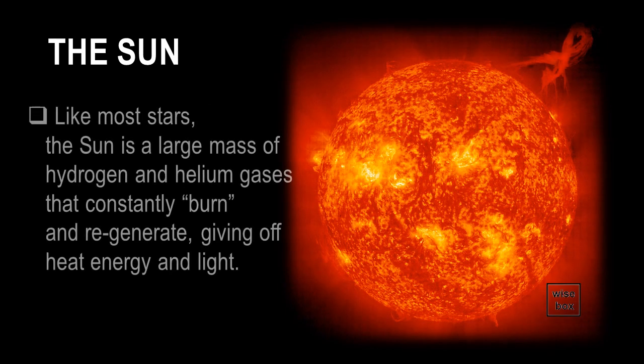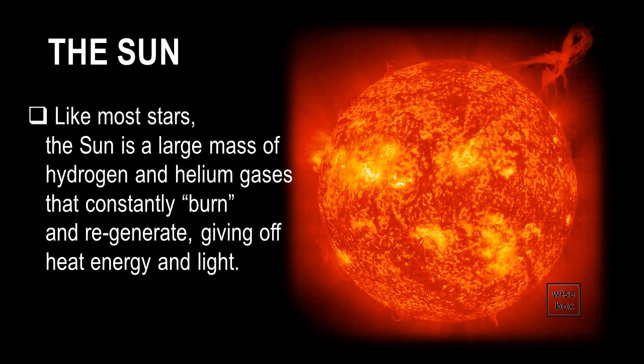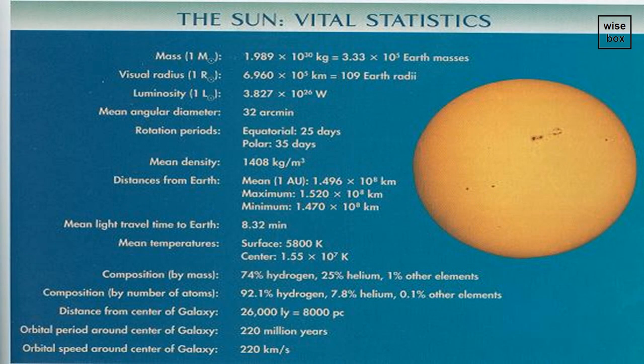Like most stars, the Sun is a large mass of hydrogen and helium gases that constantly burn and regenerate, giving off heat, energy, and light. Here are the many other characteristics of the Sun.